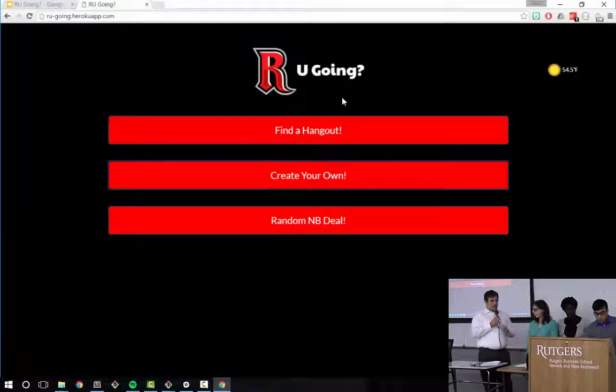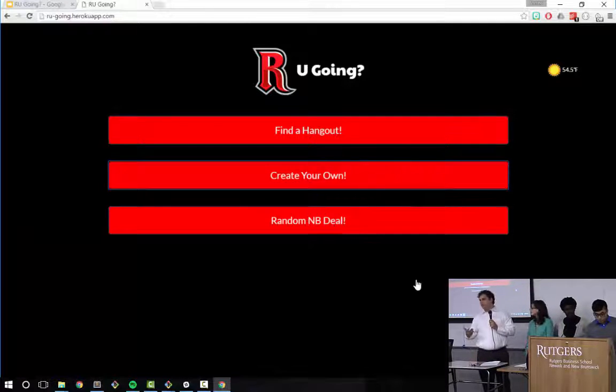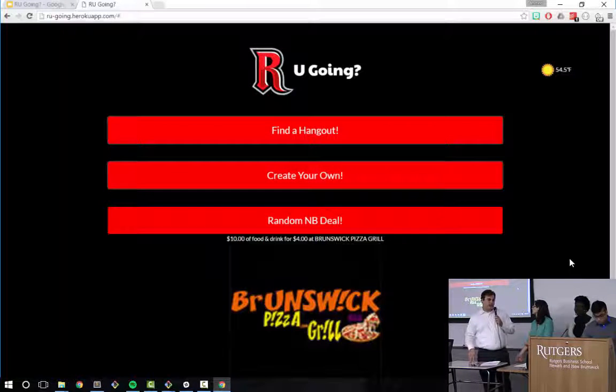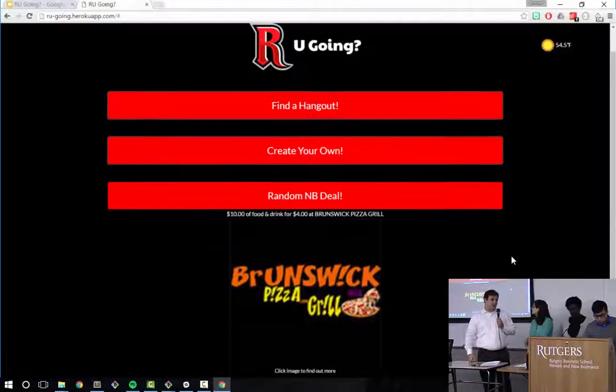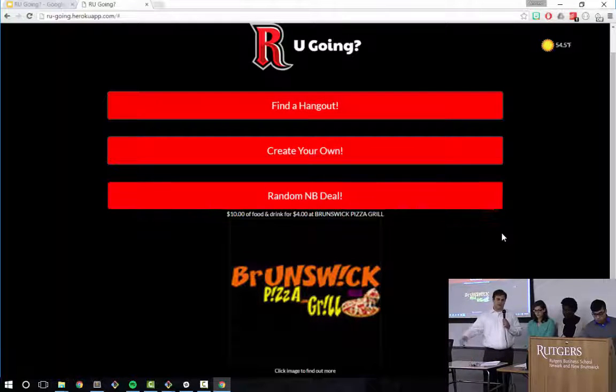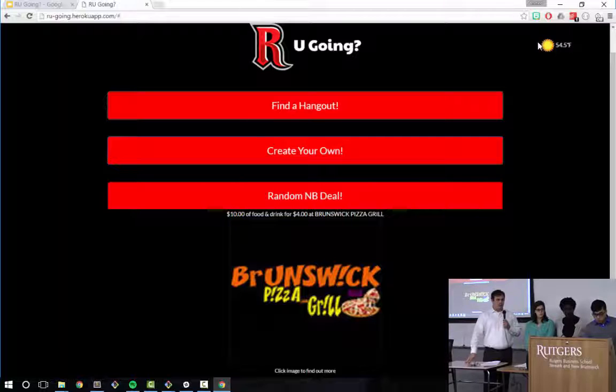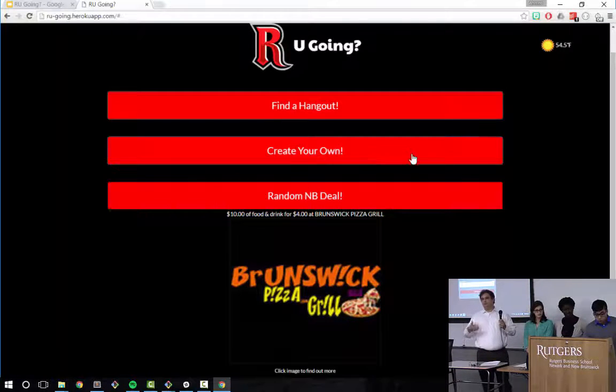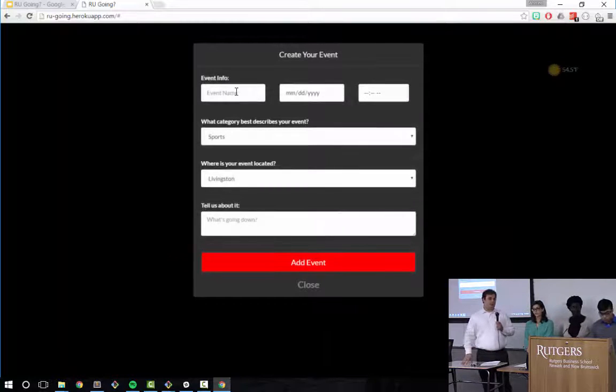Quick demo. So let's say you didn't know what you wanted to do when you met up with people. We actually have a randomized button on the front page that uses the Scoot API, which we'll get into later. So it's nice and sunny out today. Let's say you want to go play basketball. Eric and I want to go play basketball.